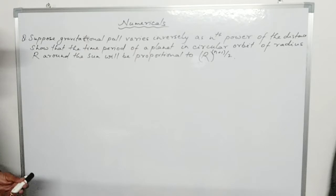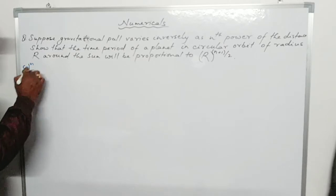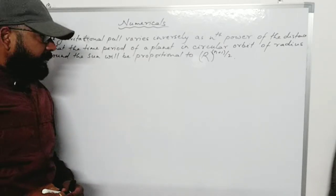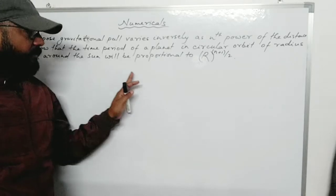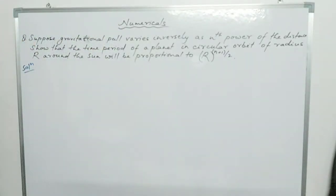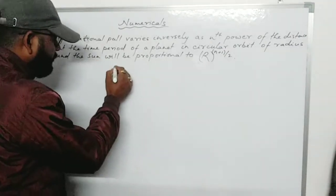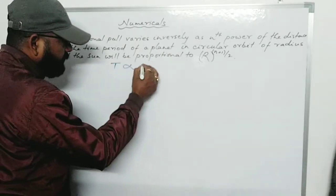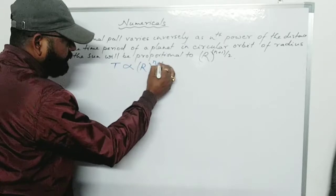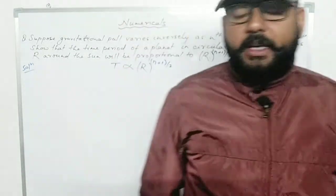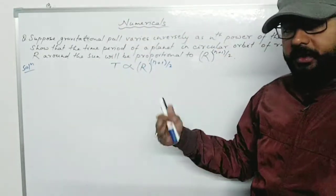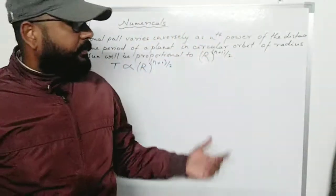Suppose gravitational pull varies inversely as the nth power of the distance, so that the time period of a planet in a circular orbit of radius R around the sun will be proportional to R to the power (n+1)/2. We have to prove that T is proportional to R^((n+1)/2). I already told about Kepler's third law and proved that formula before.